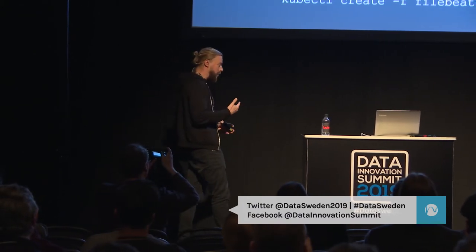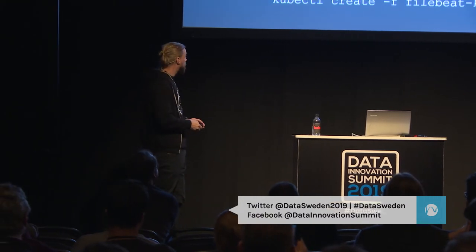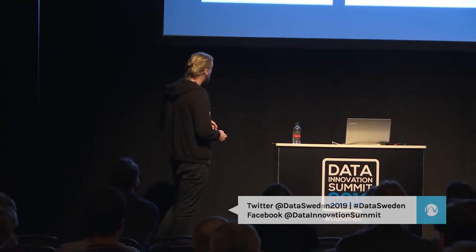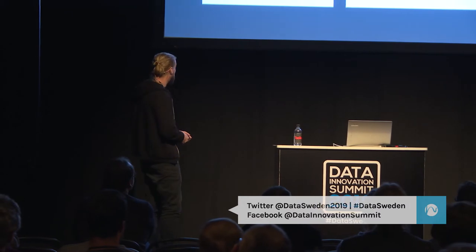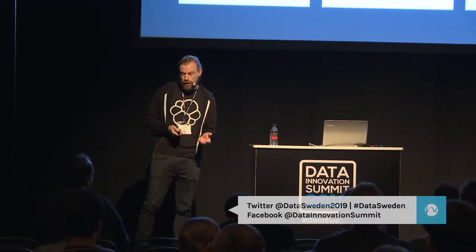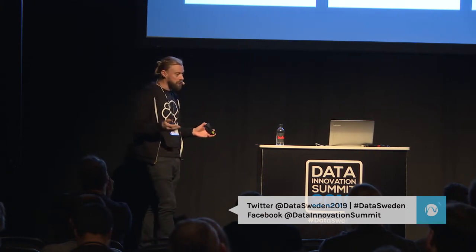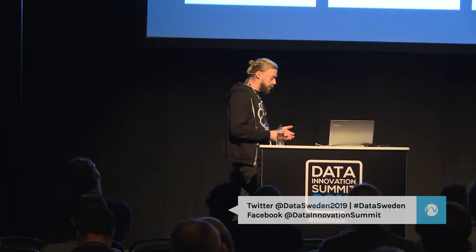Filebeat enriches the logs with contextual metadata — information about the cloud you're running on, such as region and instance type if you're on a public cloud. It also adds metadata around Docker and the container itself — name and ID — as well as Kubernetes metadata like pod and namespace. This is really crucial if you want to debug and find where in your cluster you have problems, helping to reduce the time to root cause analysis.